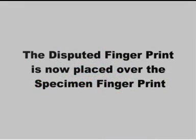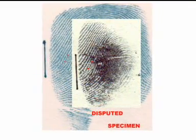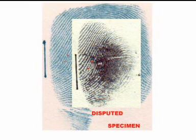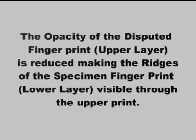The disputed fingerprint is now placed over the specimen fingerprint. The opacity of the disputed fingerprint, i.e. the upper layer, is reduced, making the ridges of the specimen fingerprint, i.e. the lower layer, visible through the upper print.